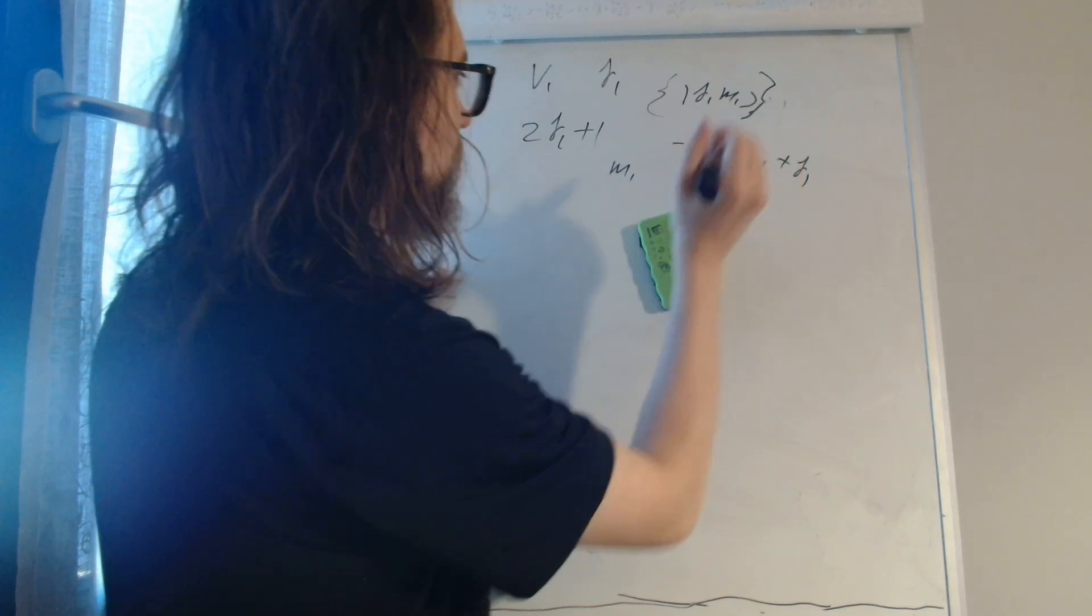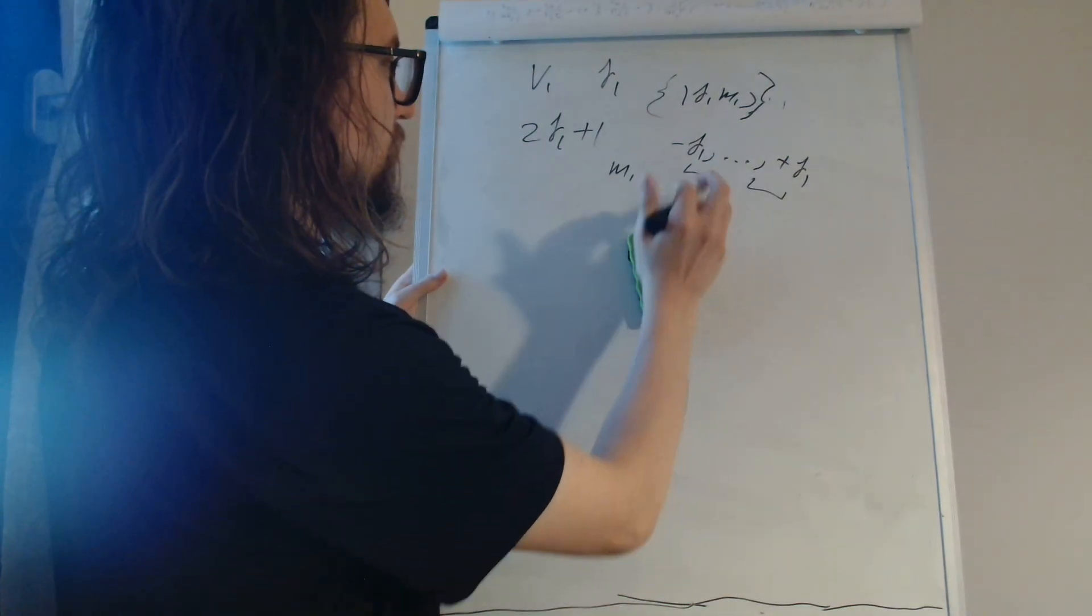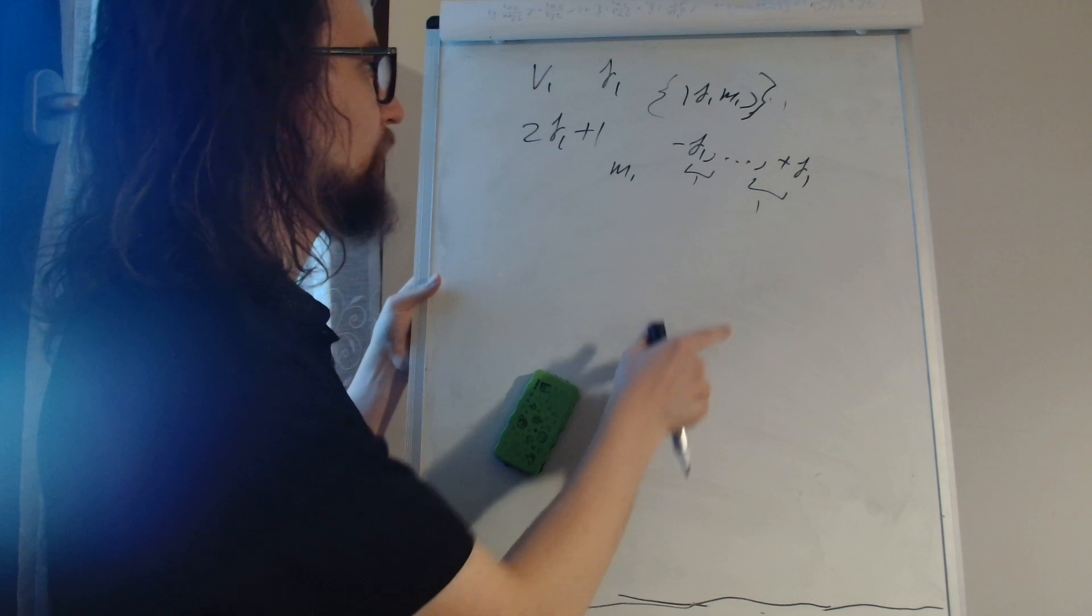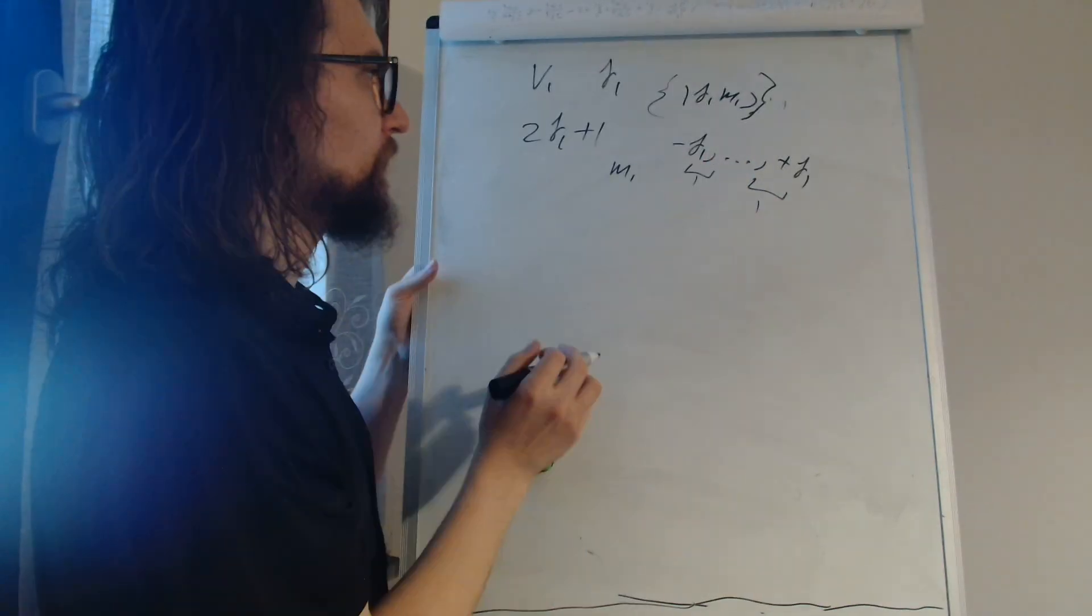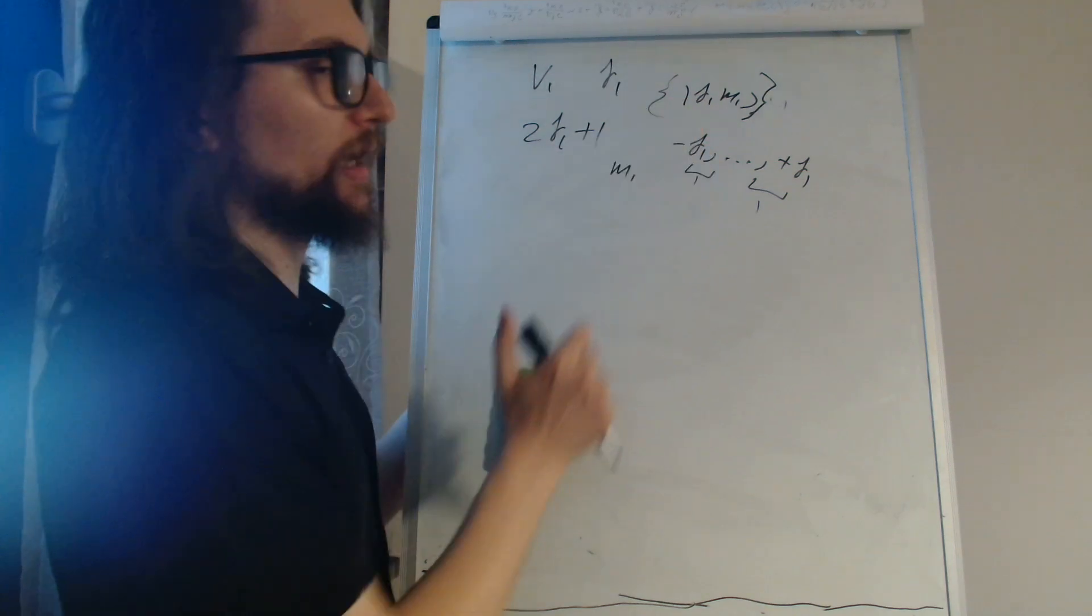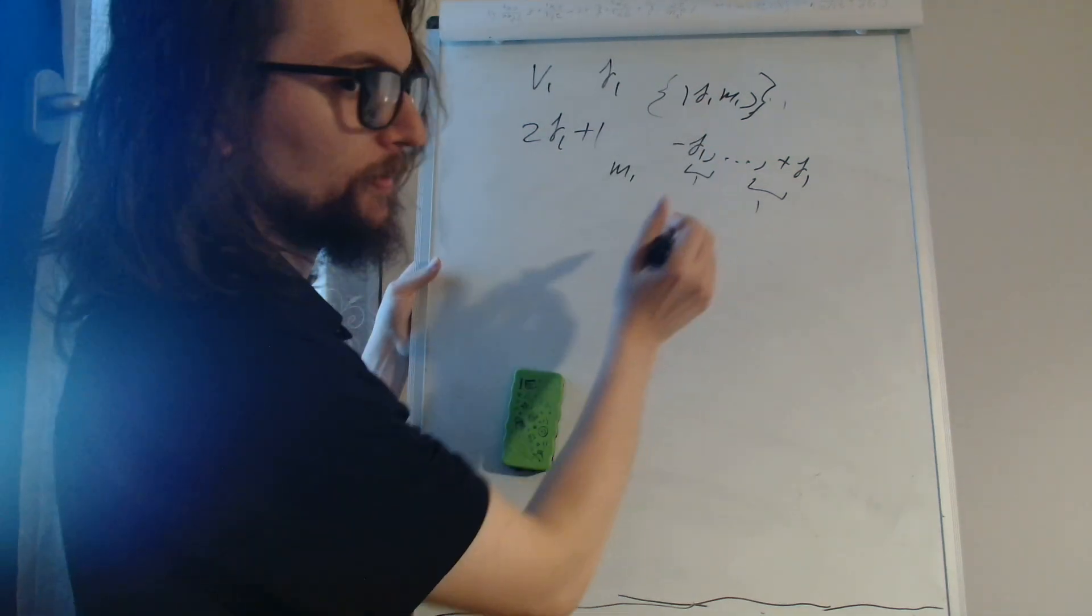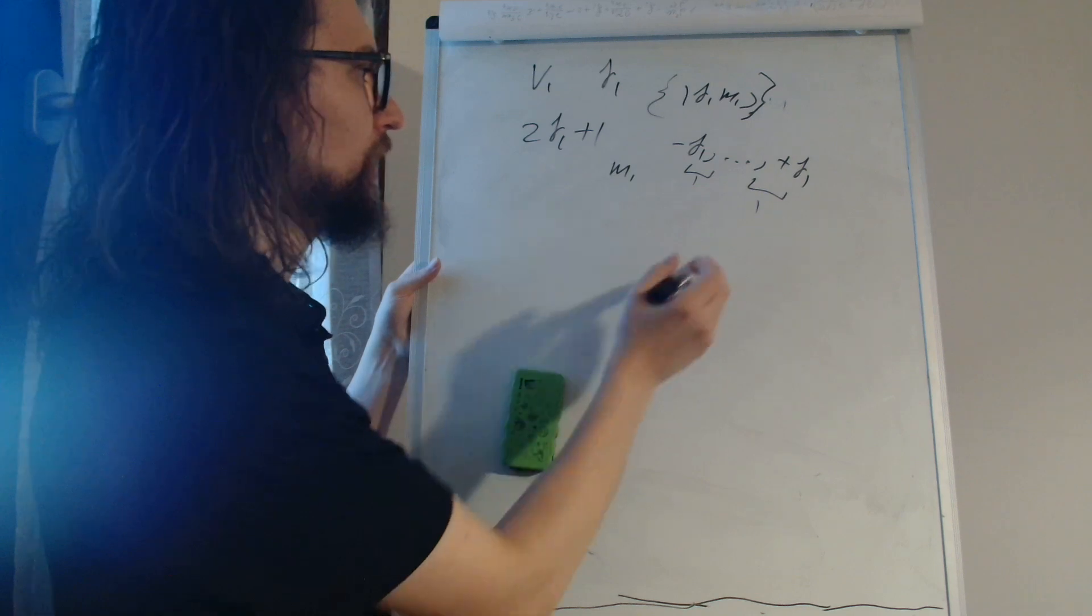All of them will be shifted by 1 in such a way that there are 2J1 plus 1 elements. So if we have an even number of states here, it will take some integer values so they will not reach 0.